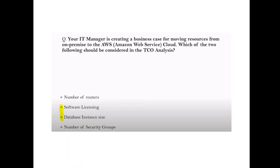Question: An IT manager is creating a business case for moving from on-premises to AWS. Which two items should be considered in a total cost of ownership analysis? Answer: Software licensing and database instance size.